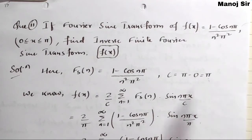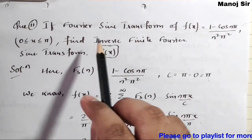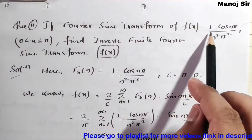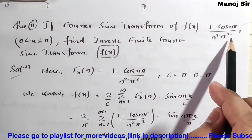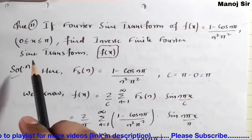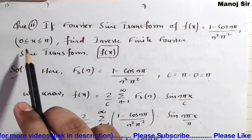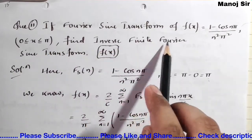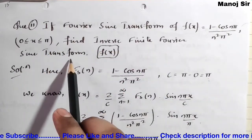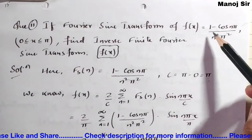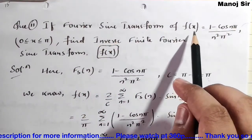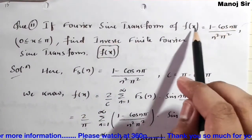We are dealing with the topic of finite Fourier transform. The problem says: if the Fourier sine transform of f(x) equals (1 - cos nπ) / (n² π²) in the range 0 to π, then find the inverse finite Fourier sine transform.